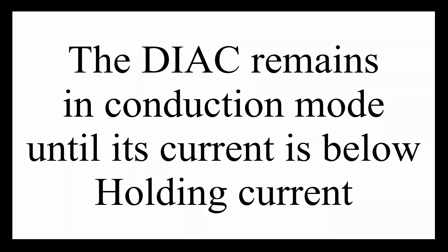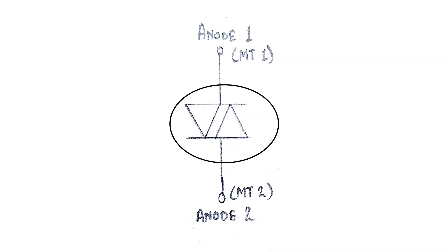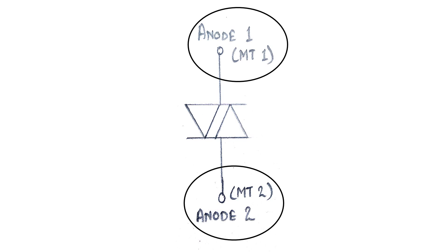The DIAC remains in its conduction state until the current through it drops below what is termed the holding current, normally designated by the letter IH. Below the holding current, the DIAC reverts to its high resistance state. The DIAC circuit symbol is generated from two triangles held between two lines. In some way this demonstrates the structure of the device, which can be considered as two junctions. The two terminals of the device are normally designated either anode 1 and anode 2, or main terminal 1 and 2 (MT1 and MT2).